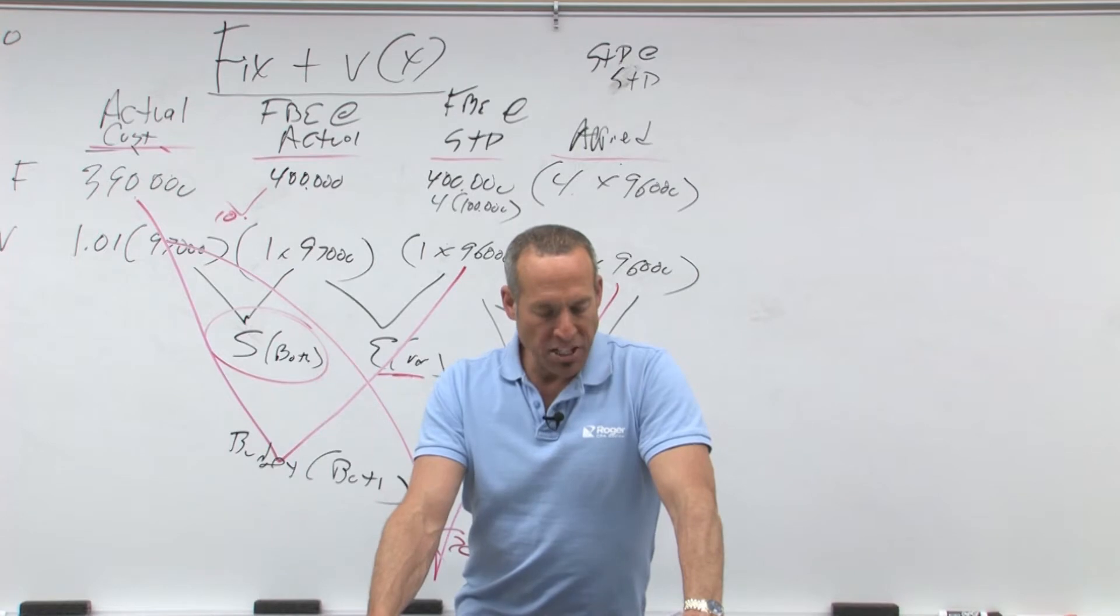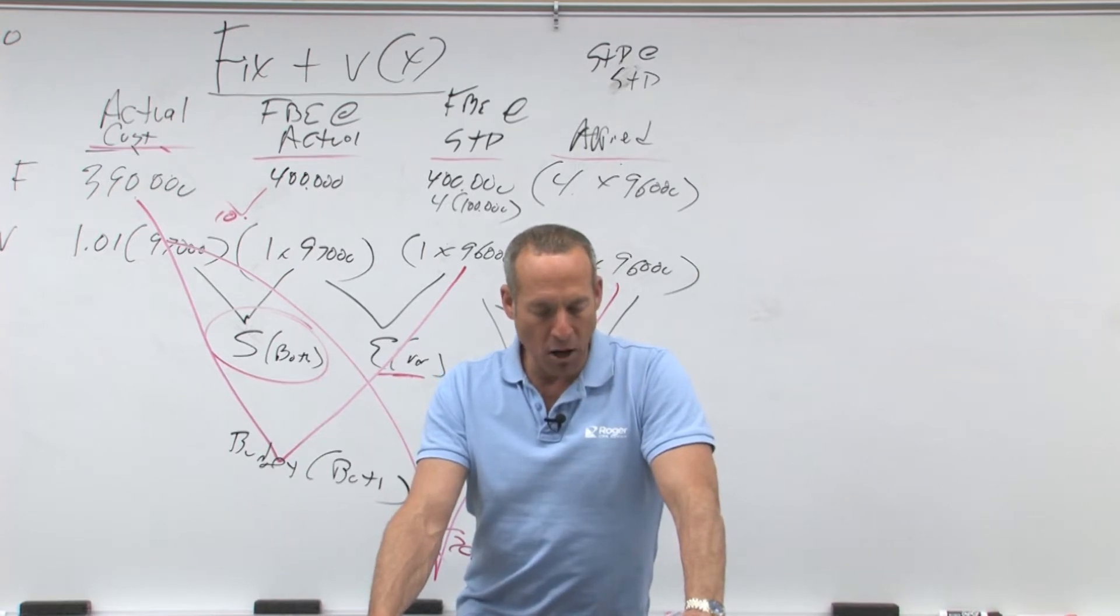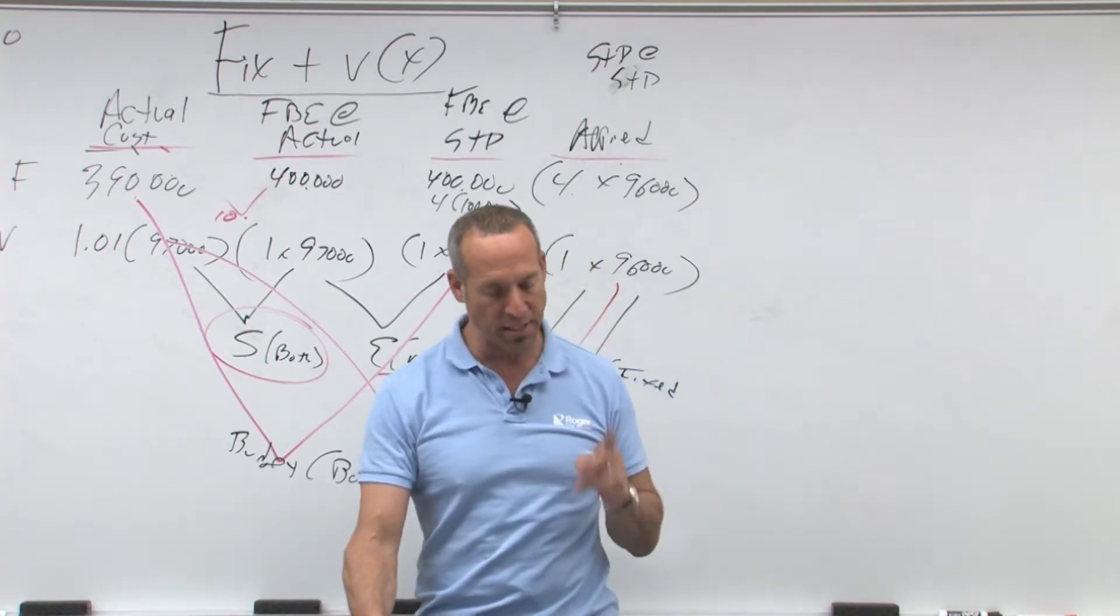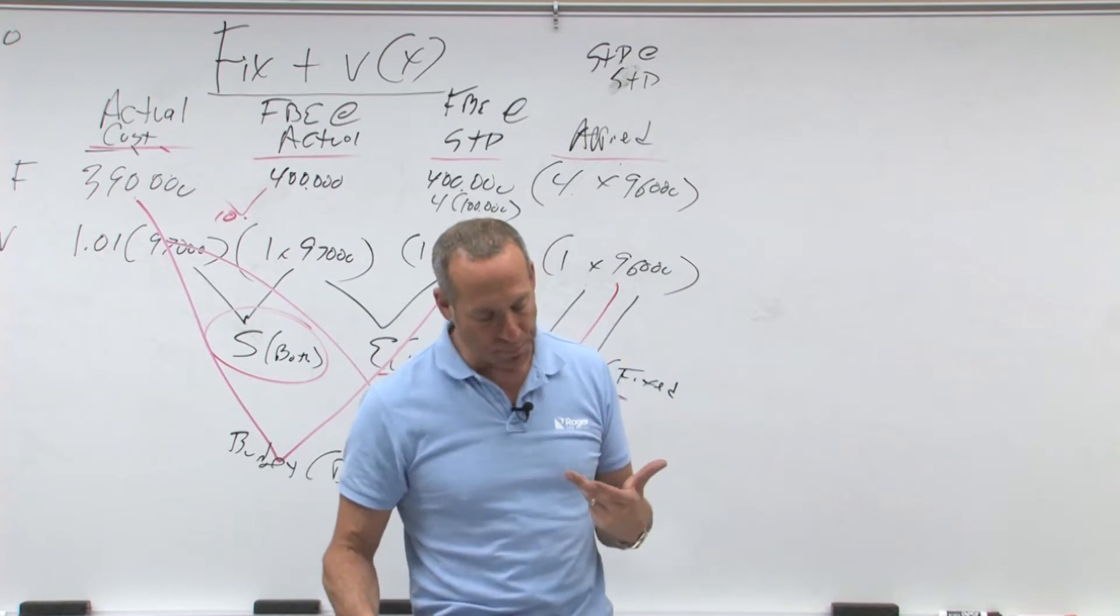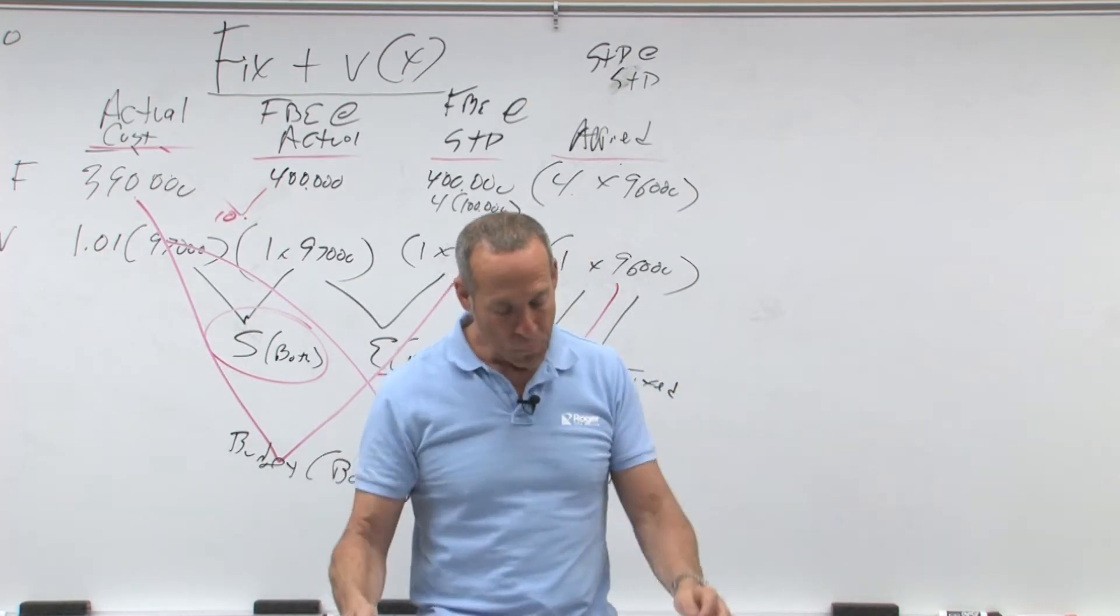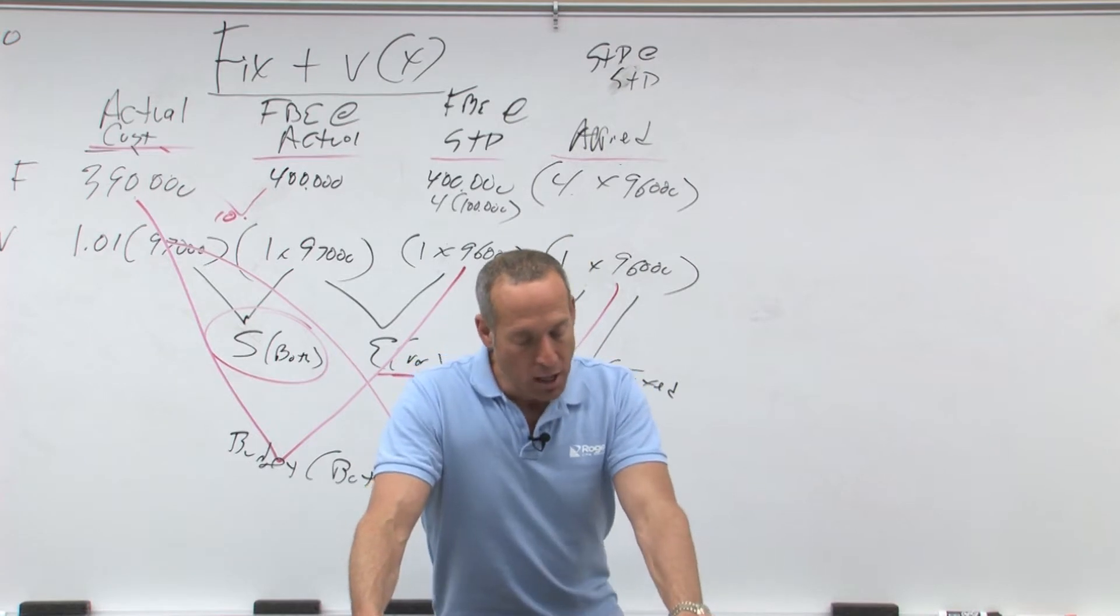When companies apply a standard cost system to overhead, the amount of overhead applied will be determined on the basis of the standard amount of allocation base that should have been used in the production process based on the number of units. If overhead is applied, for example, on direct labor hours, then overhead applied can be calculated.